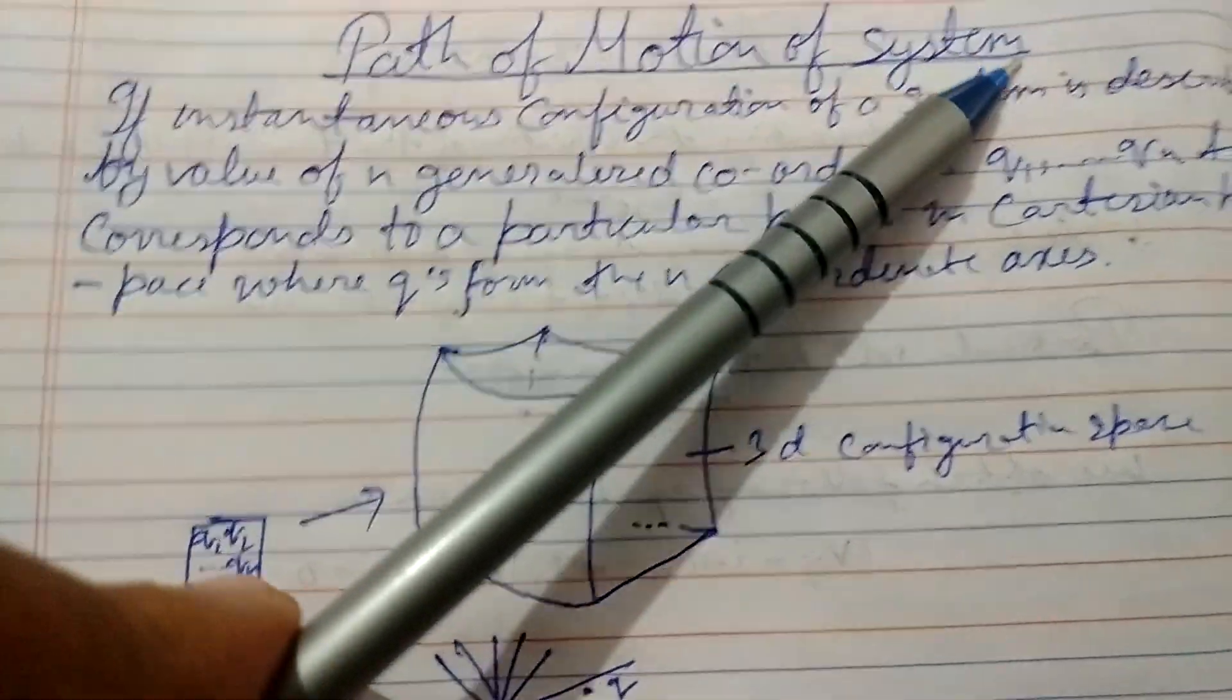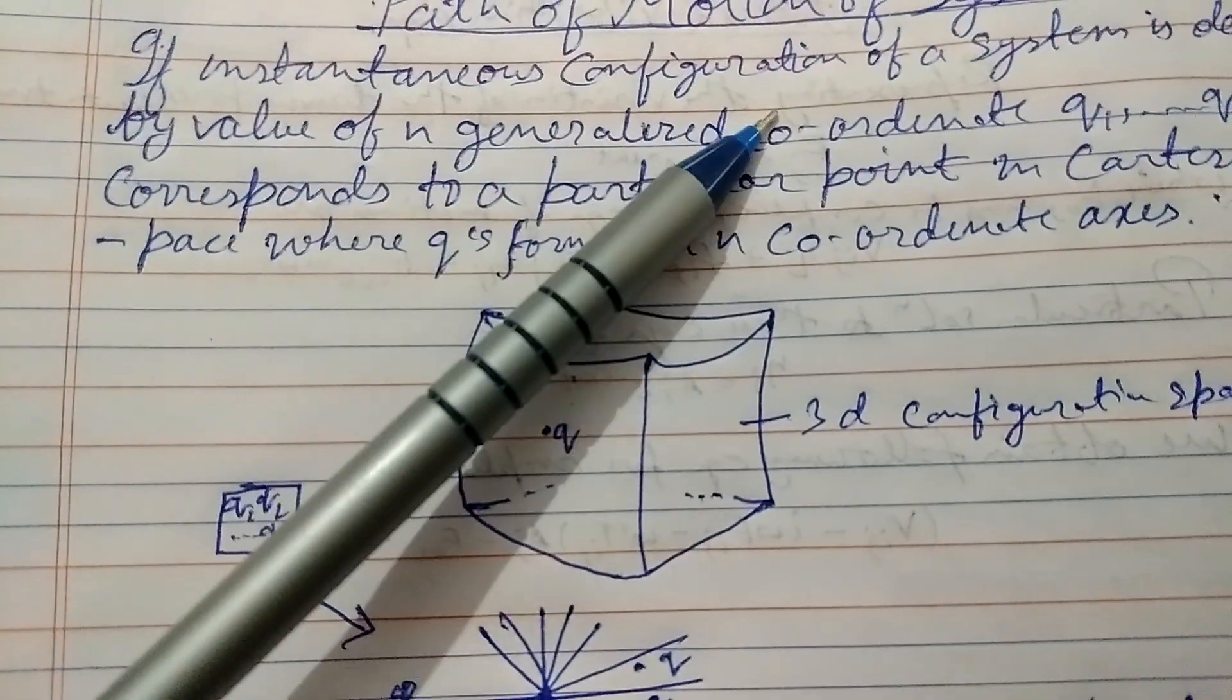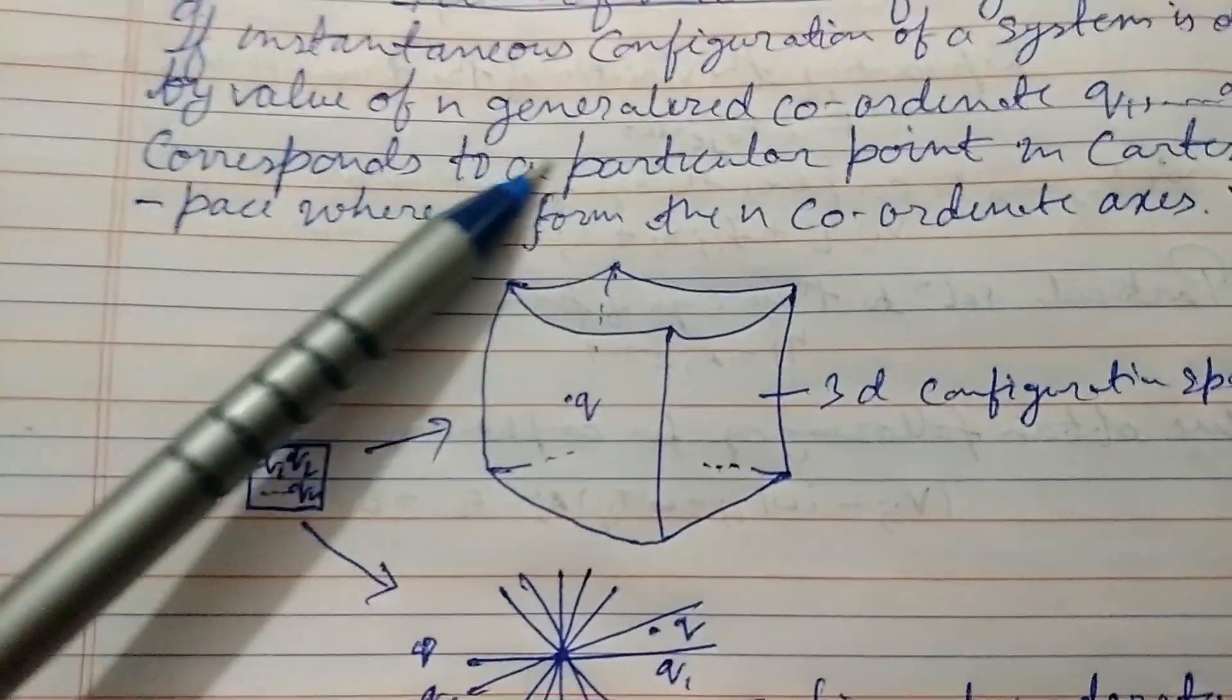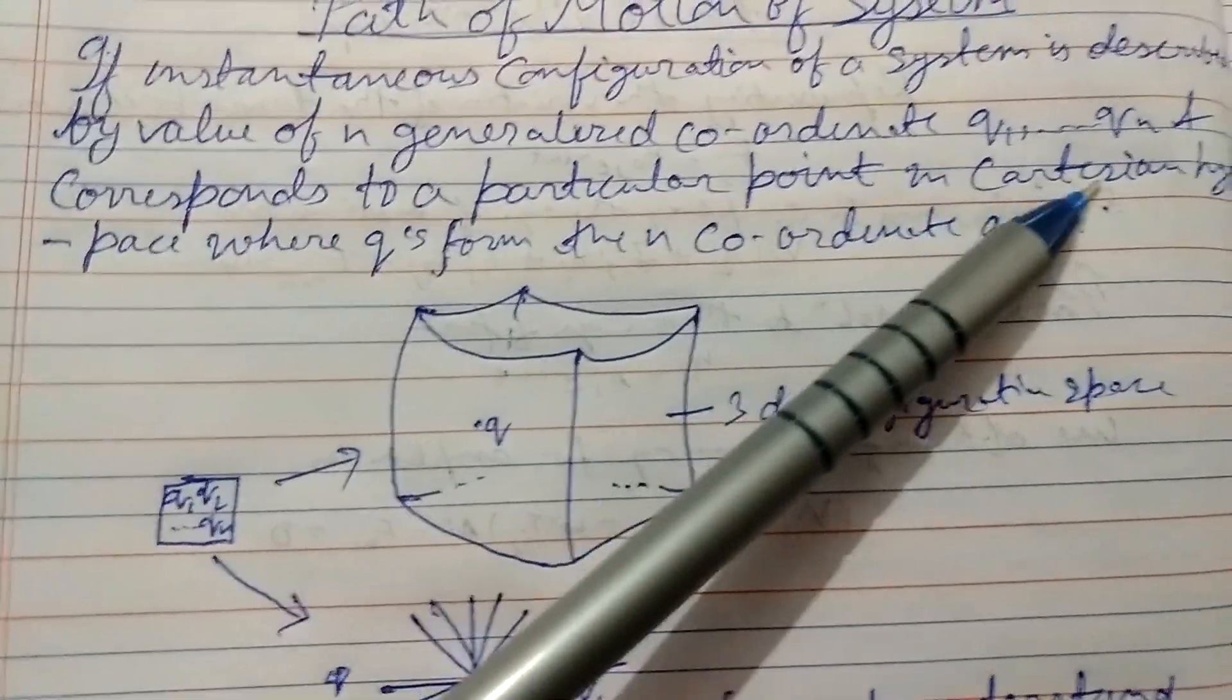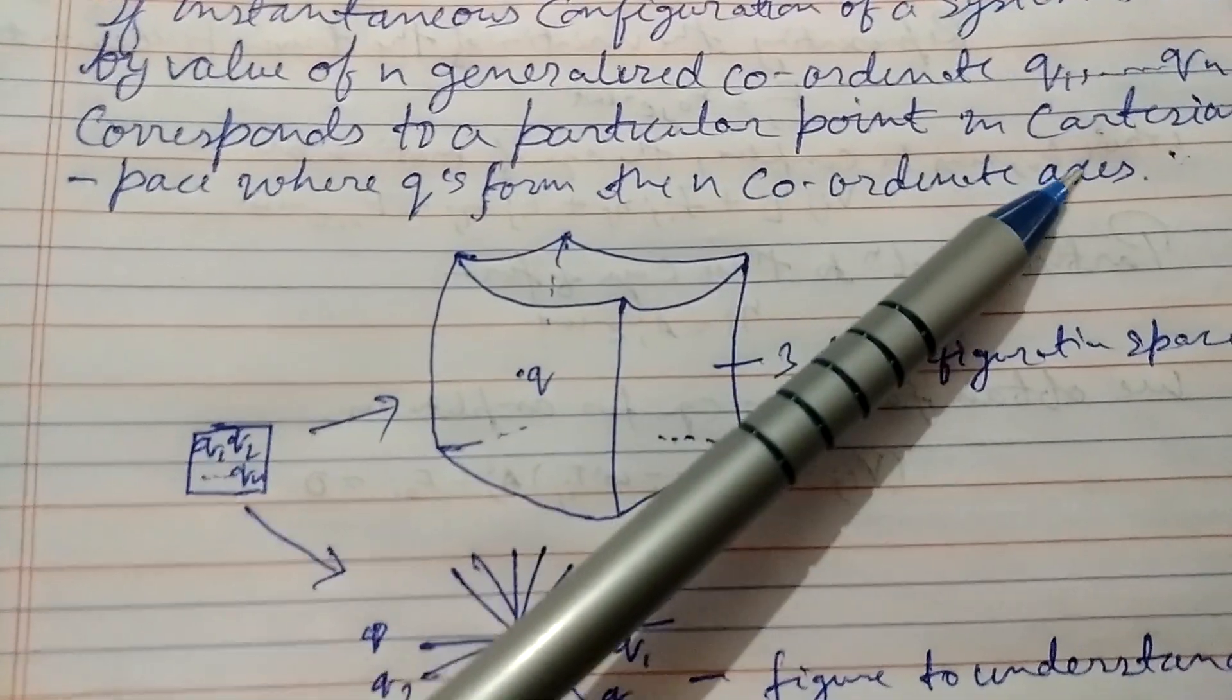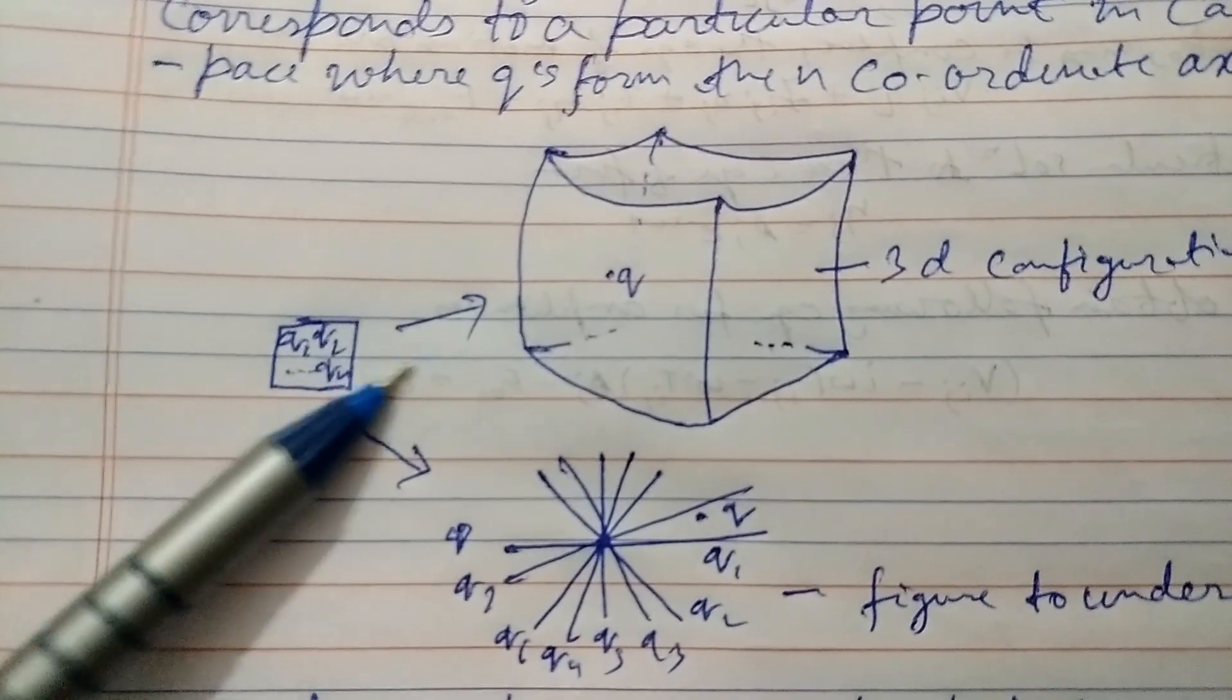If instantaneous configuration of a system is described by a value of n generalized coordinates q1 up to qn and correspond to a particular point in cartesian hyperspace where qs form the n coordinate axis. This is the q1 up to qn points.